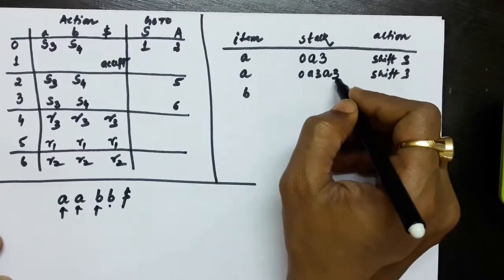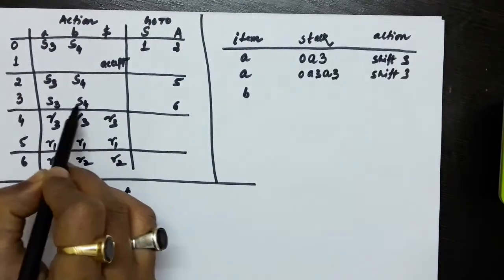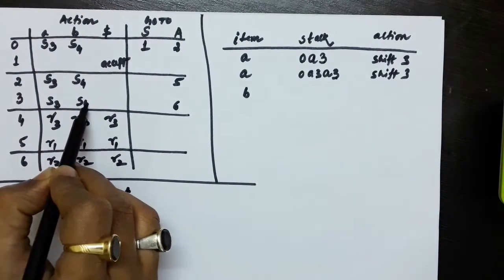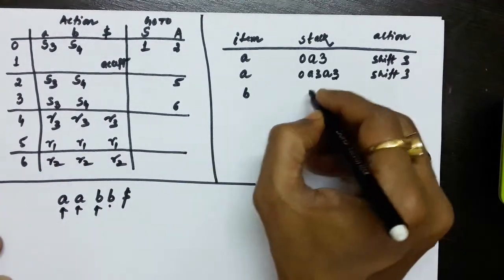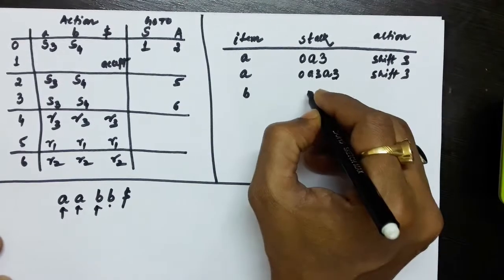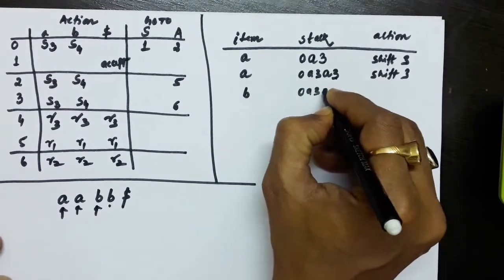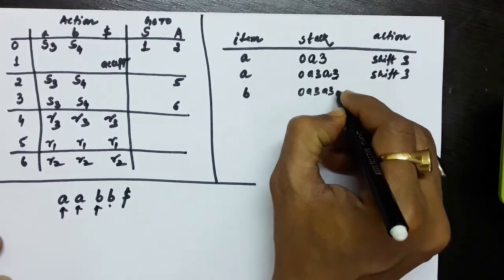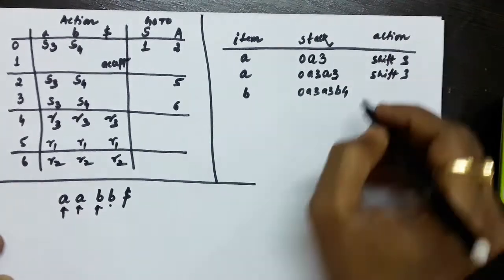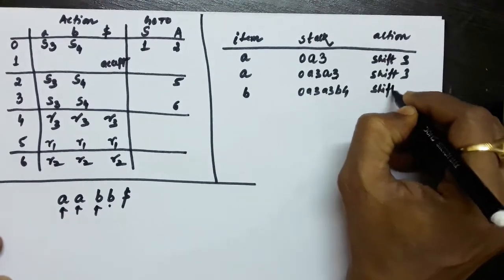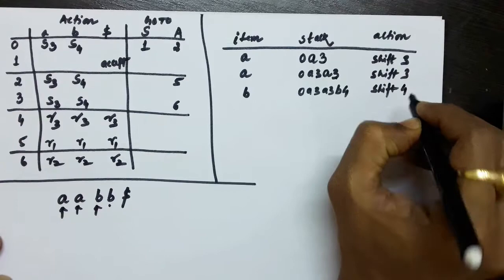Now the next symbol is small b. State 3 on small b gives us S4, meaning we shift b onto the stack. So the stack now has: 0, A3, A3, and then B4. We have shifted the symbol b onto the stack.